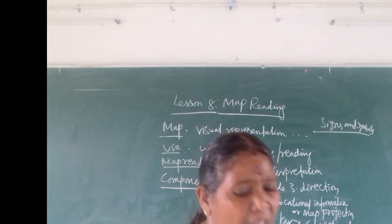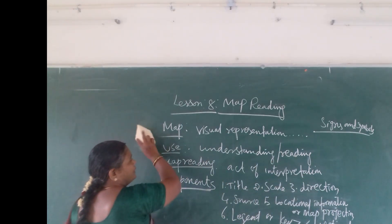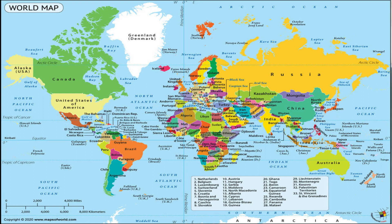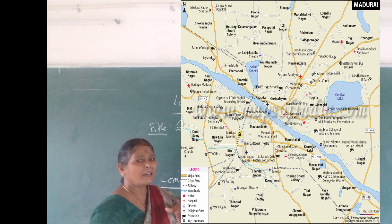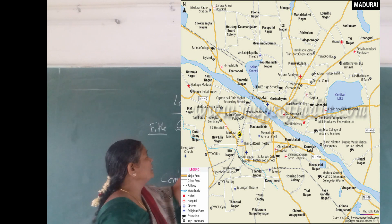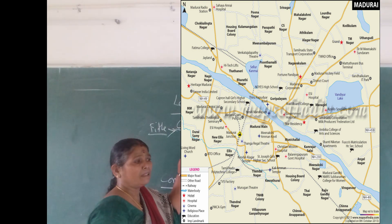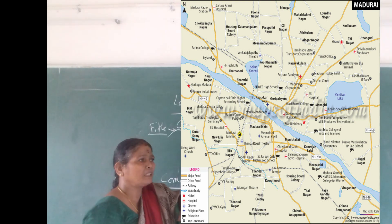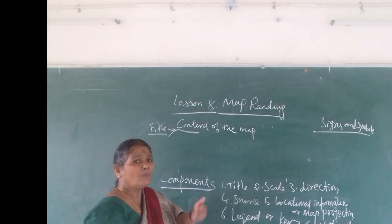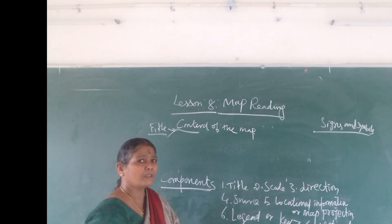Now children, we are going to see them one by one. What is title? The title is represented like a heading — it explains the content of the map. It is given either at the top corner or bottom corner of the map to explain the content. For example, when you are writing a composition, the title tells you what the matter or topic is going to be about.